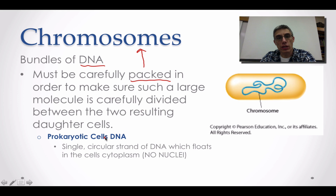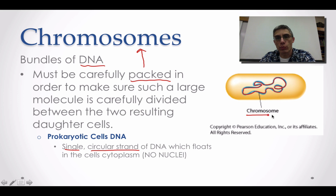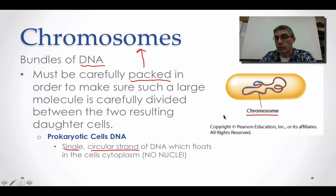When looking at prokaryotic cells, the DNA in these cells is basically represented by a single circular strand of DNA. Over here on the right, you can see an example of a prokaryotic cell with this very light blue circular strand of DNA. Some textbooks will not use the term chromosome when referring to prokaryotic cells — they'll simply give a description of their DNA.